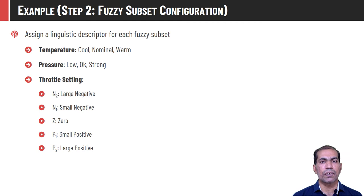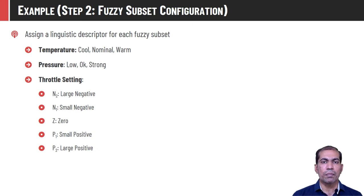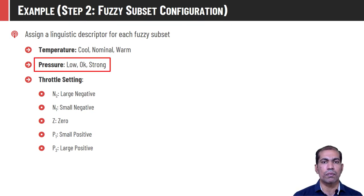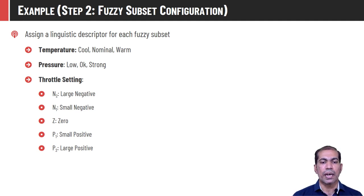Step two is fuzzy subset configuration — we divide the range of temperature, pressure, and throttle setting into fuzzy subsets. The range of input parameters is divided into three parts and the output into five parts. Temperature takes the subsets cool, nominal, and warm. Pressure is represented by low, okay, and strong. The output throttle setting has five subsets: N2 (large negative), N1 (small negative), Z (zero), P1 (small positive), and P2 (large positive).